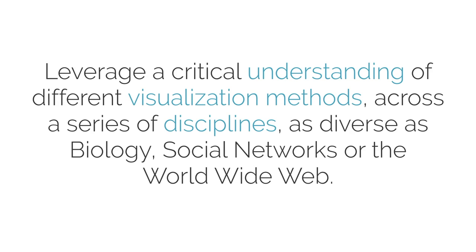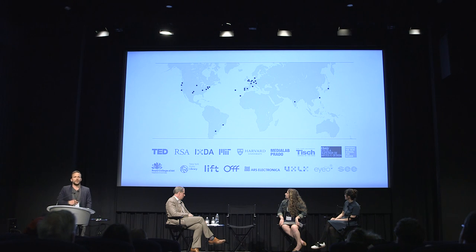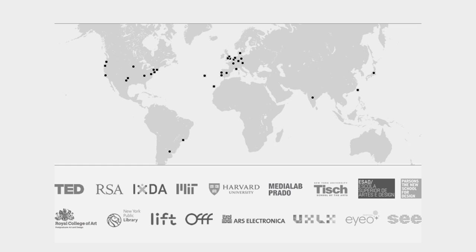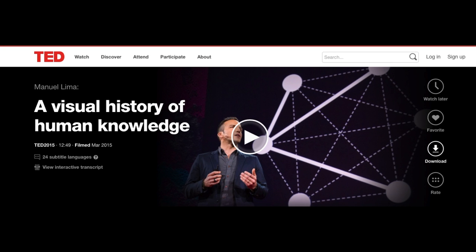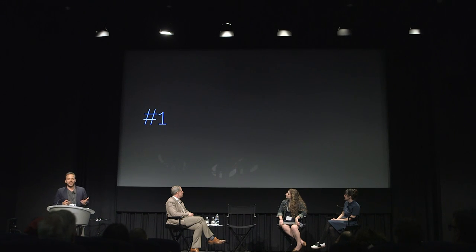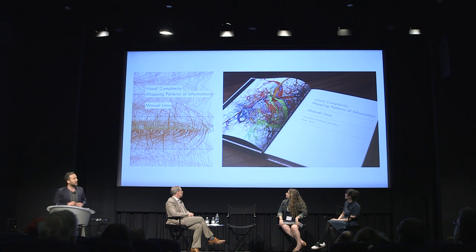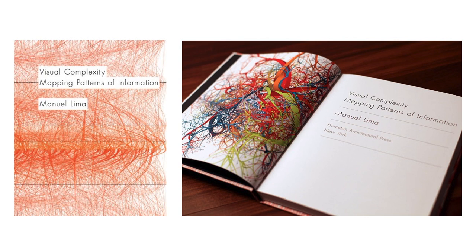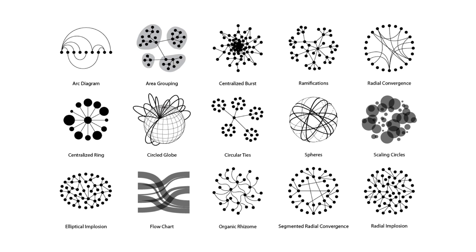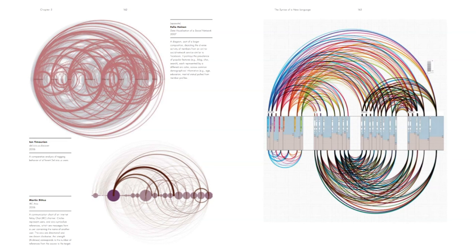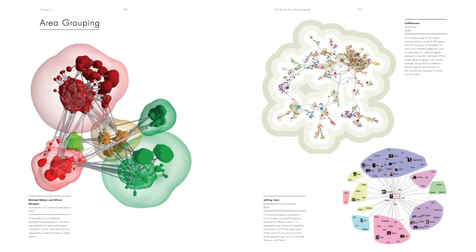The goal of Visual Complexity has always been the same: to leverage a critical understanding of different visualization methods across a wide range of disciplines and domains of human knowledge, from biology to social networks to the World Wide Web. That interest led me to speak at various venues including TED, which was a humbling and nerve-wracking experience, and ultimately led to my first book, Visual Complexity: Mapping Patterns of Information — a large taxonomical effort making sense of what people were doing across the world and through time in visualizing networks.